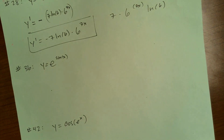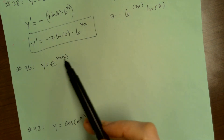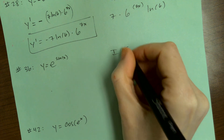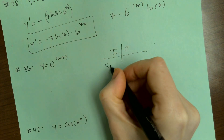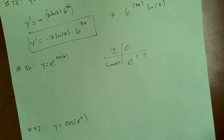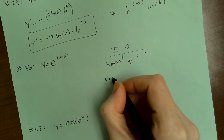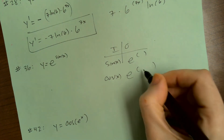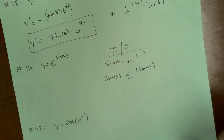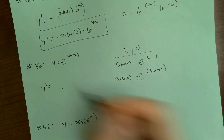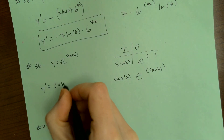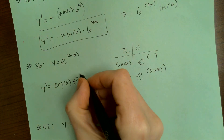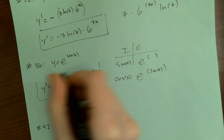For e to the sine of x, the inside is sine of x and the outside is e to the blank. Derivative of the inside is cosine x; derivative of e to the blank is e to the blank; and sine goes back in. So y prime equals cosine of x times e to the sine of x.